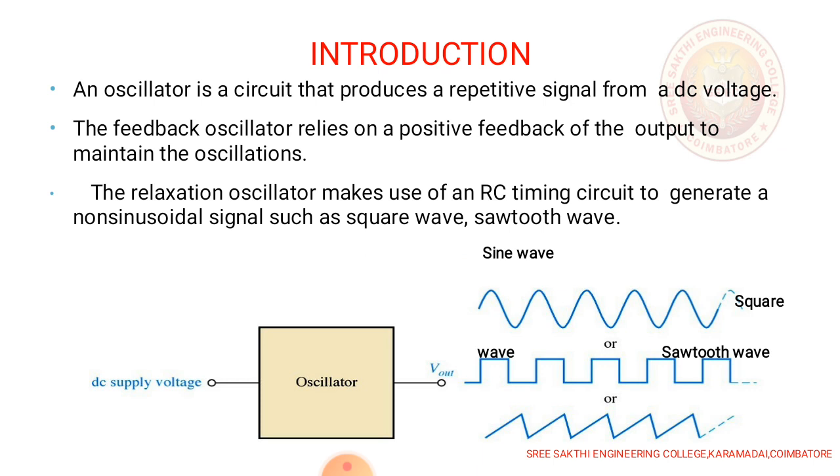In this block, oscillator has a DC supply voltage and produces the output of sine wave, square wave, sawtooth wave, triangular wave, etc.